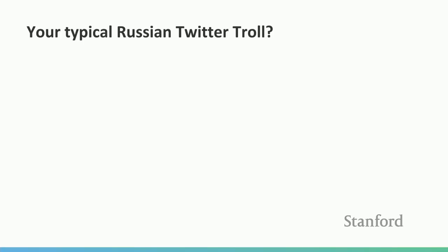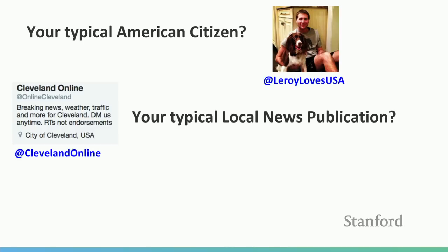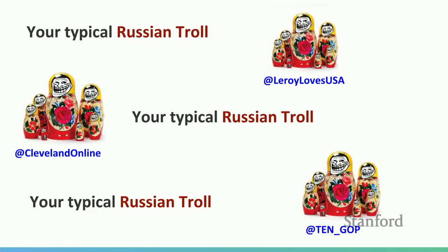Looking at the data, we saw three categories of troll accounts. One is accounts designed to look like your average American citizen — here's Leroy, with a stereotypical American profile picture. Another group was made to look like local news publications — this is 'Cleveland Online,' bringing you breaking news, weather, traffic, and more for Cleveland from St. Petersburg. The third category was meant to look like local political party-affiliated Twitter accounts — this is 'TEN_GOP,' meant to look affiliated with the Tennessee Republican Party — but of course it was not, operated by the Internet Research Agency in St. Petersburg.